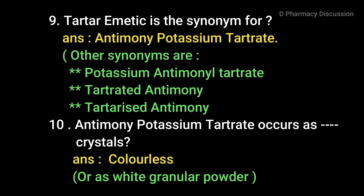Next question: 'Tartaremetic' is the synonym for antimony potassium tartrate. Other synonyms are potassium antimonyl tartrate, tartarated antimony, and tartarized antimony. Antimony potassium tartrate occurs as colorless crystals or as white granular powder. Its other properties are: it is soluble in 17 parts of water and insoluble in alcohol.